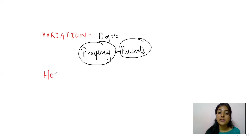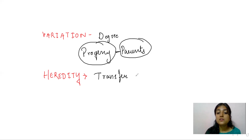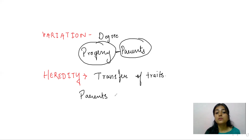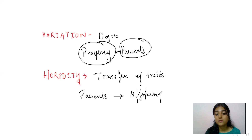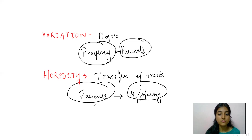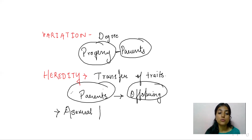Third is heredity. Heredity is defined as the transfer of characters or traits from the parental generation to the offspring. This process can occur in both types of reproduction — that is, asexual and sexual.